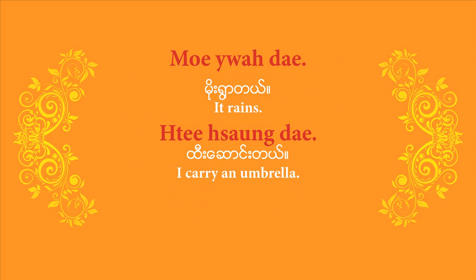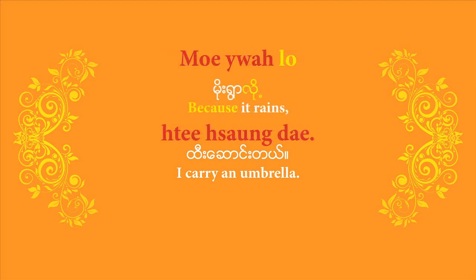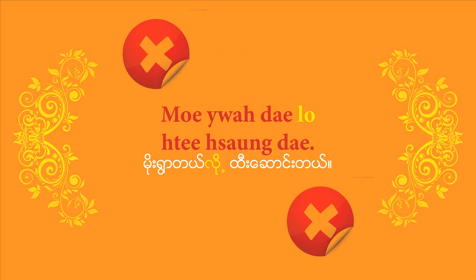Now let's put the two independent sentences together. The first is 'mo joare de' — it rains. The second is 'ti sounde' — I carry an umbrella. Put them together: 'mo joare lo ti sounde' — because it rains, I carry an umbrella. Remember, you have to drop the affirmative sentence-end particle 'de' and replace it with 'lo'. You can't simply join the two sentences with 'lo' sandwiched in between. So 'mo joare de lo ti sounde' would be incorrect. It's 'mo joare lo ti sounde'.